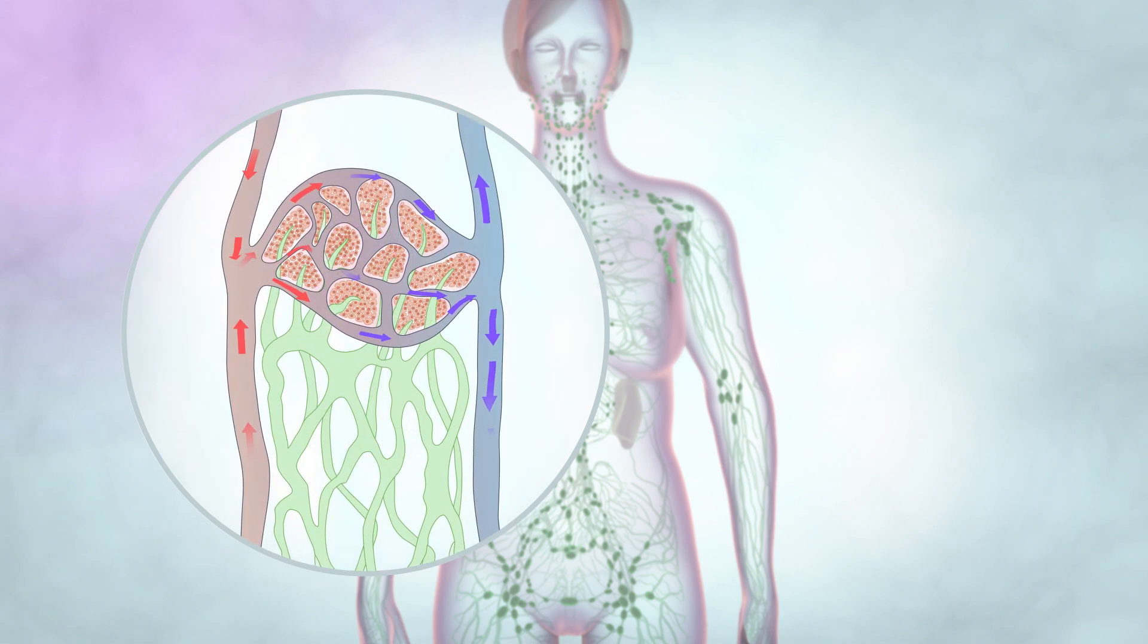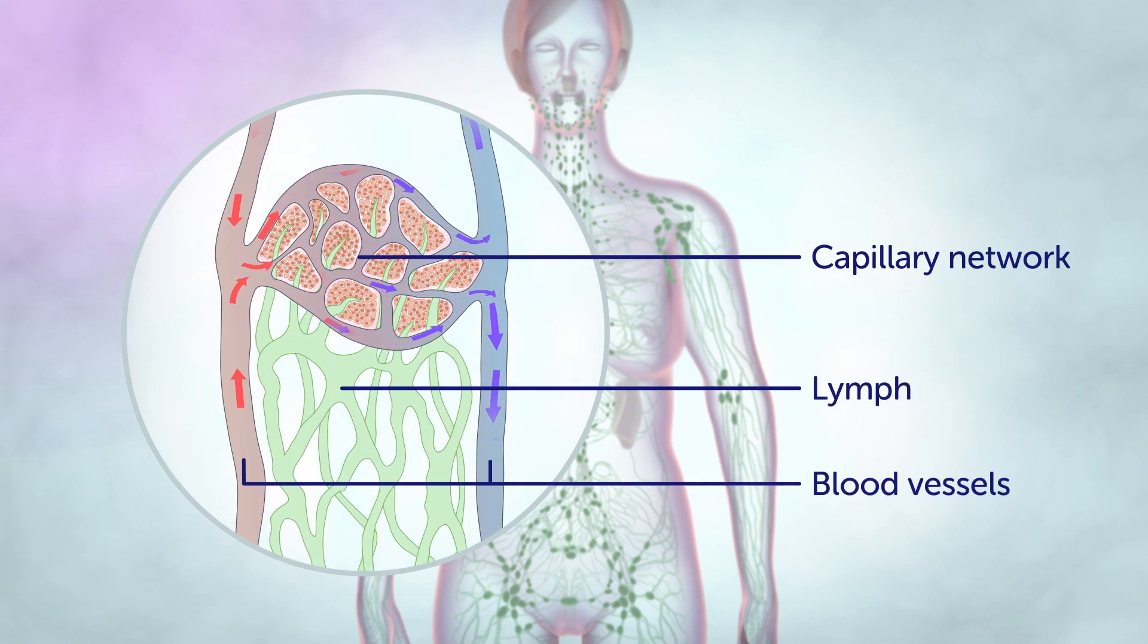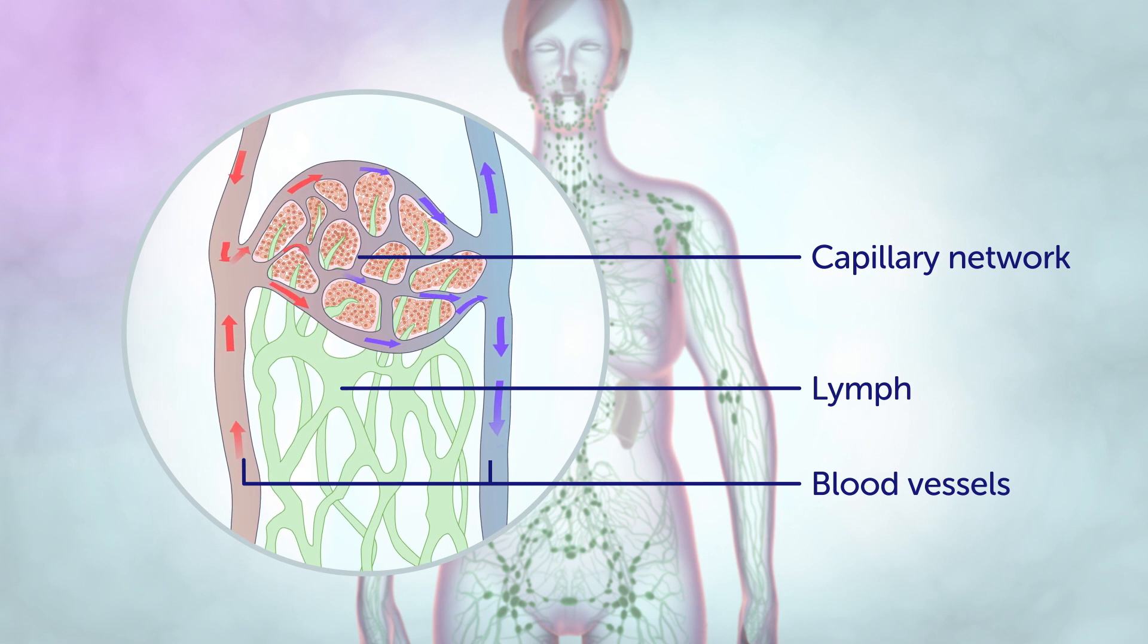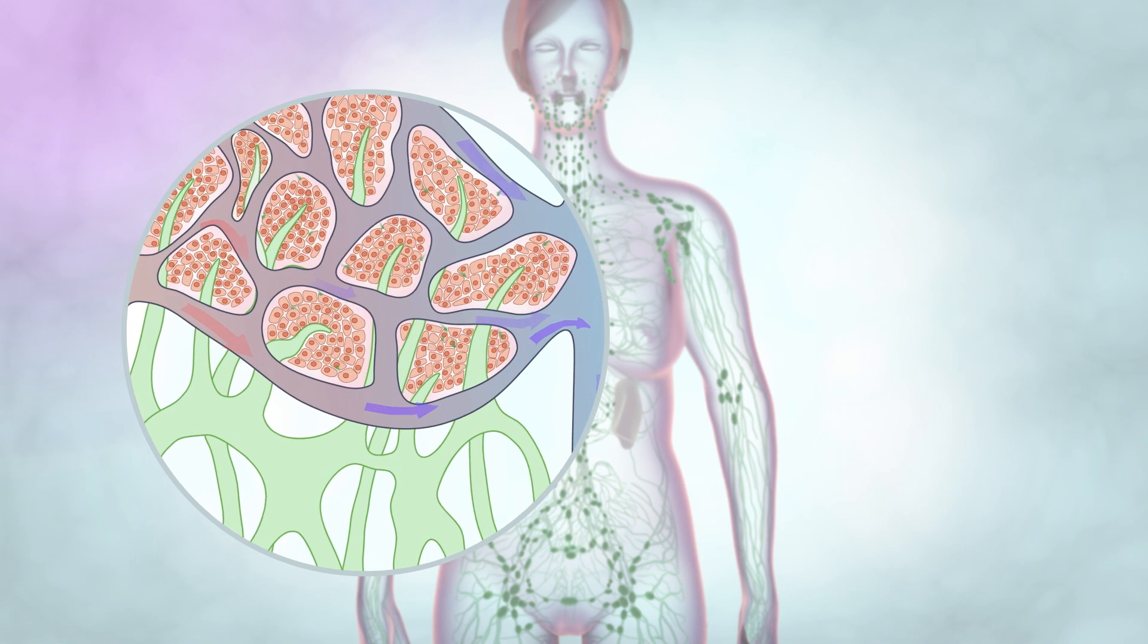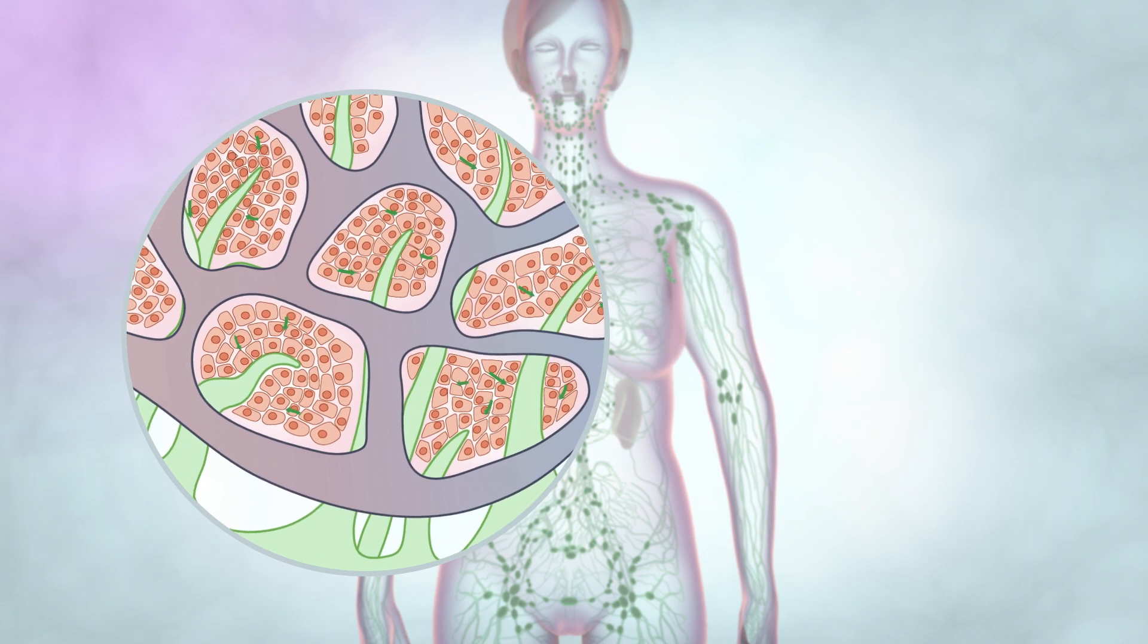The lymphatic system carries a colorless liquid called lymph. As the blood circulates around the body, fluid passes from the blood into the body tissues, carrying food to the cells.